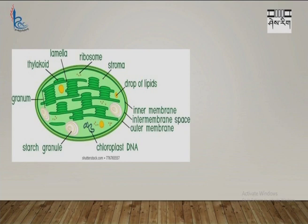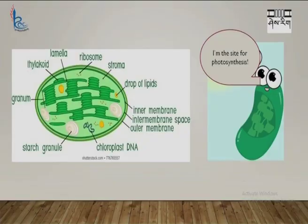In the membranes of the thylakoid, there are chlorophyll pigments, and the light phase of photosynthesis occurs in these membranes. In the stroma, the dark phase of photosynthesis occurs, and all the enzymes required for the dark reaction are present in the stroma. Remember: light phase of reaction occurs in the membranes of thylakoid, and dark phase of reaction occurs in the stroma. The chloroplast is the site for photosynthesis.